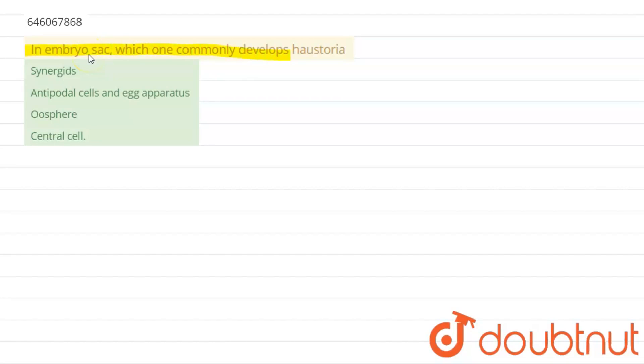The options are synergist, antipodal cell and egg apparatus, oosphere, or central cell.